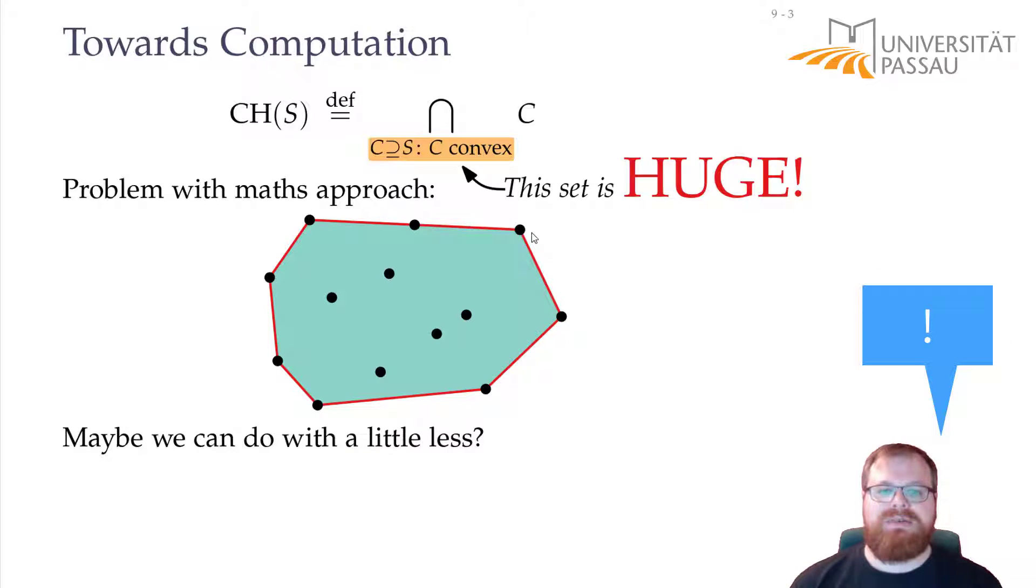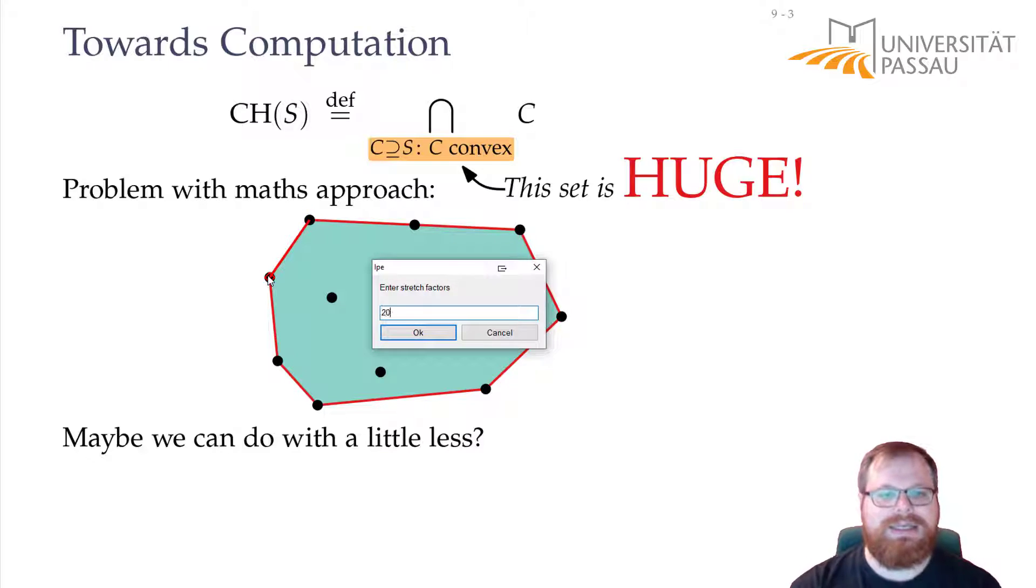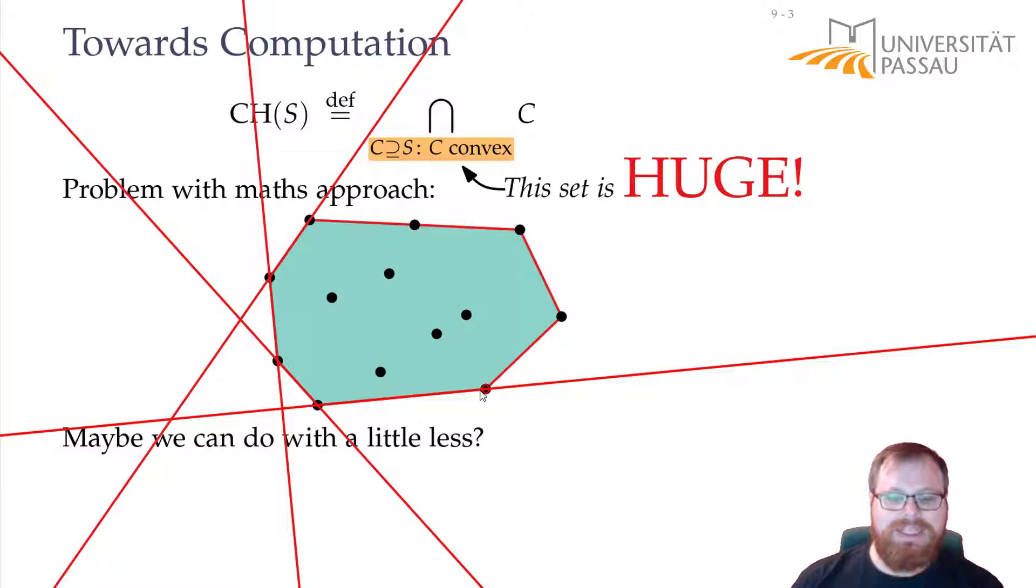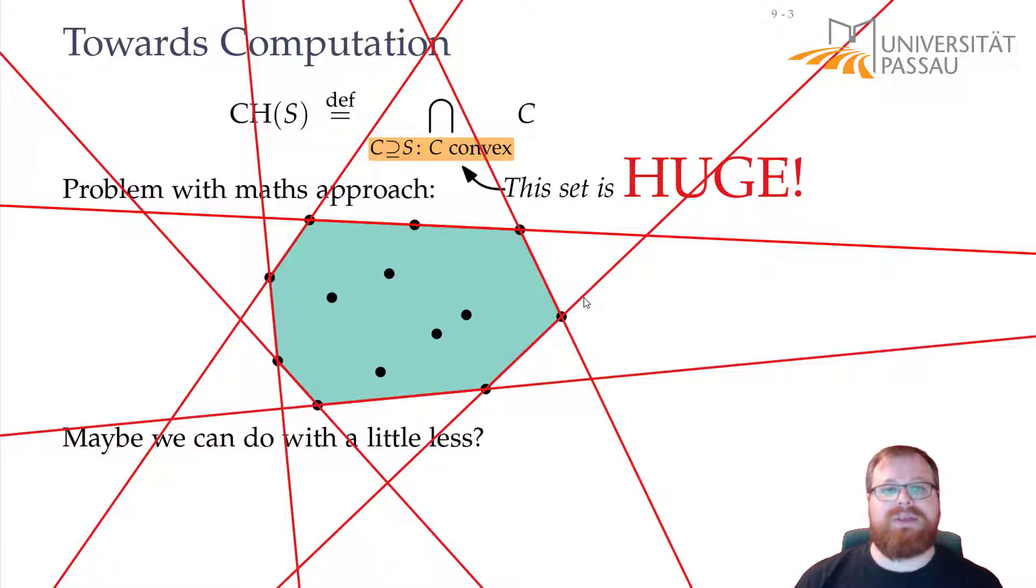For this particular convex hull, we could easily describe it as an intersection of only half planes. Let's take this edge on the boundary of the convex hull and extend it. Then we get a half plane of all the points that lie below it. We take the next edge, we extend it, and now we have a half plane, and the convex set lies to the right of this half plane. Take the next edge, and so on, until we have looked at all the convex hull edges, and each of them describes a half plane. And these half planes are the only ones that we need to describe this convex hull. The convex hull is also the intersection of these half planes that we created.